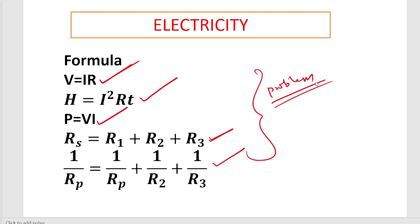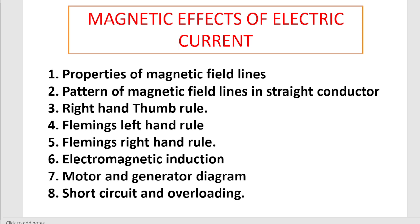That covers the Electricity lesson. Next is Magnetic Effects of Electric Current. First, properties of magnetic field lines may be asked for two marks - how they move outside the magnet, how they emerge. This is repeated in question papers. Also, the pattern of magnetic field lines in a straight conductor - if current is flowing through a straight conductor, the pattern will be like circular rings.